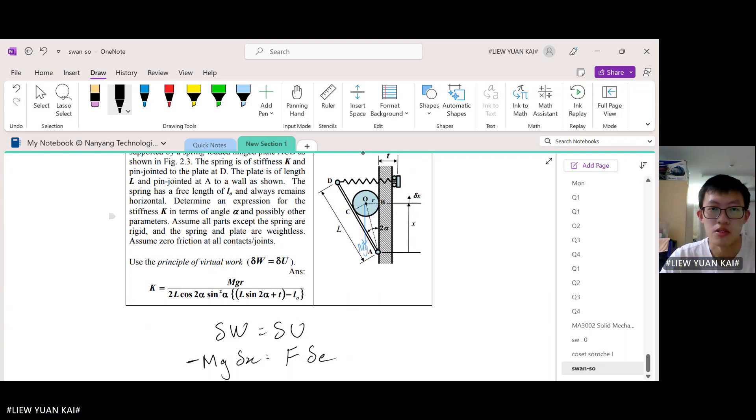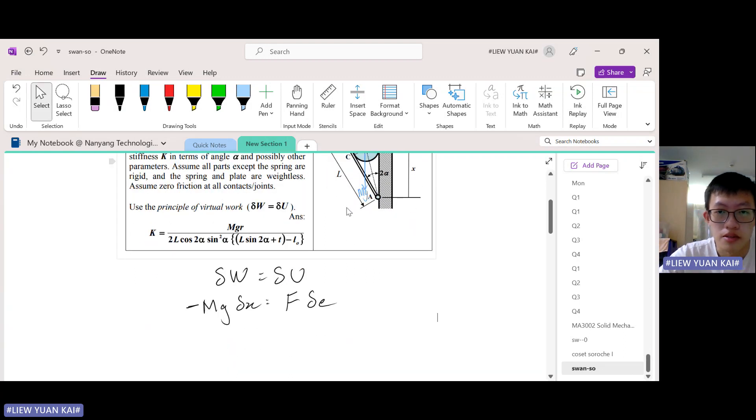And also when alpha changes, the cylinder will roll up and down, correct? So x will change. So see, alpha can be related to x and it can be related to the extension. So let us go ahead and use alpha as the common variable.